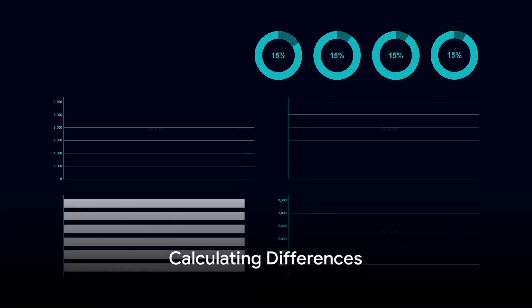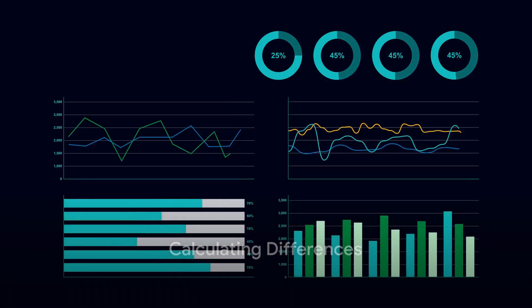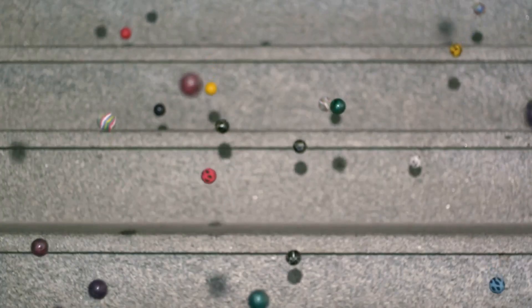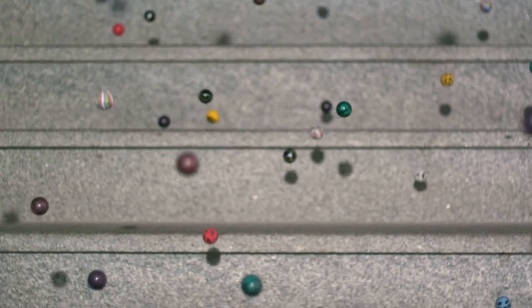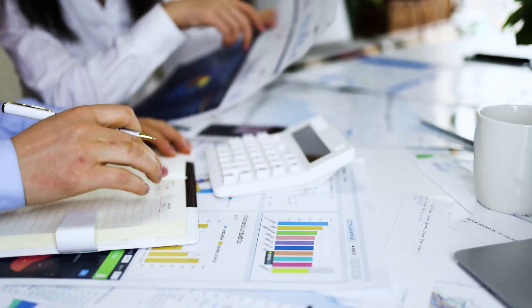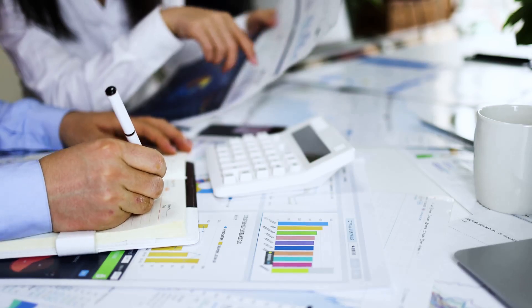Next, we subtract each data point in the independent variable from its mean. It's like measuring how far each marble is from the balance point. We do the same for the dependent variable.